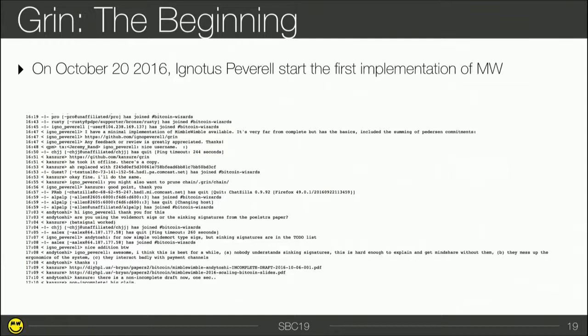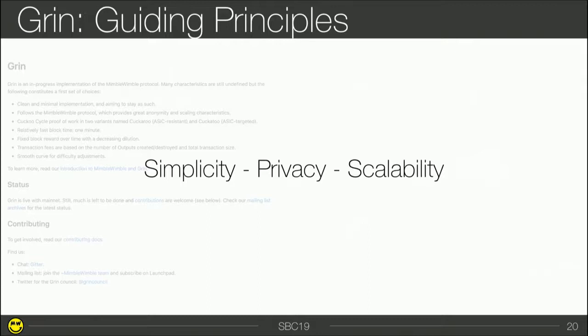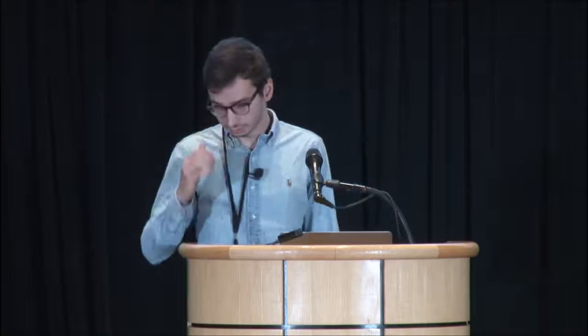When Ignatius started Grin, the idea was to create a simple blockchain, because MimbleWimble in a way is simple. The guiding principles were simplicity, privacy, and scalability. These principles influenced the development of Grin during these two years from 2016 to now. MimbleWimble is just one of the building blocks of Grin — you need many more parts to have a complete cryptocurrency. Today I want to talk about four of them, four building blocks in Grin that show the iterative process of building a cryptocurrency and the cool technology inside Grin.